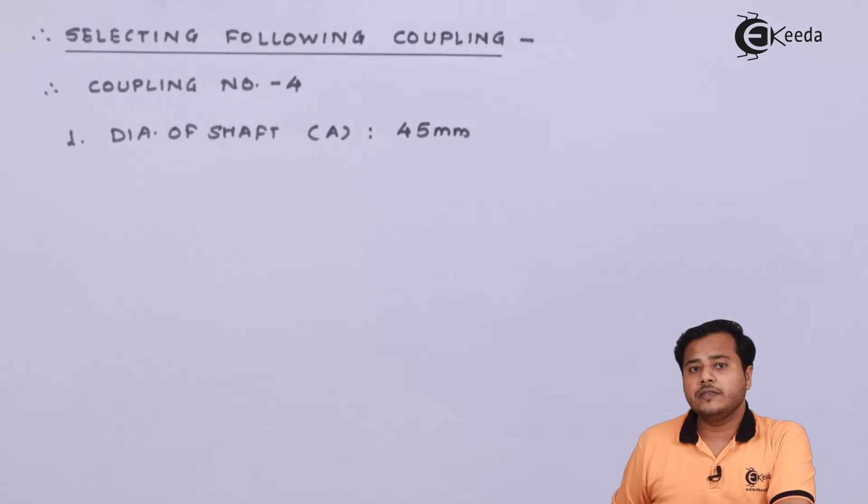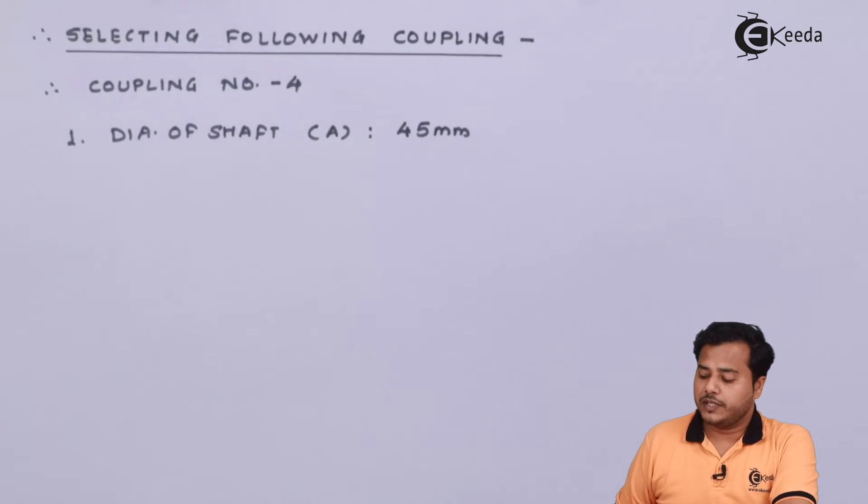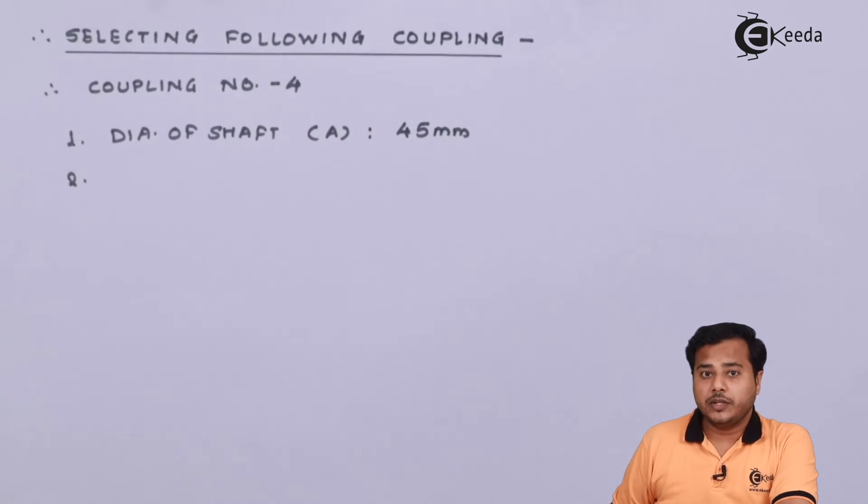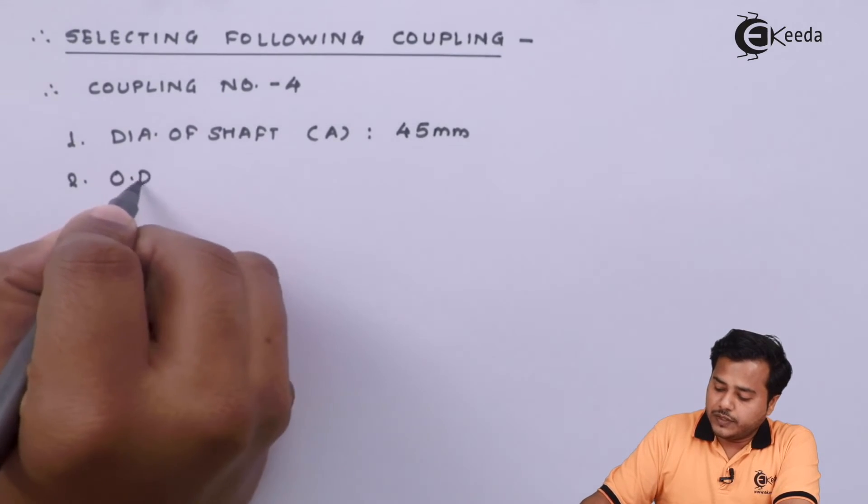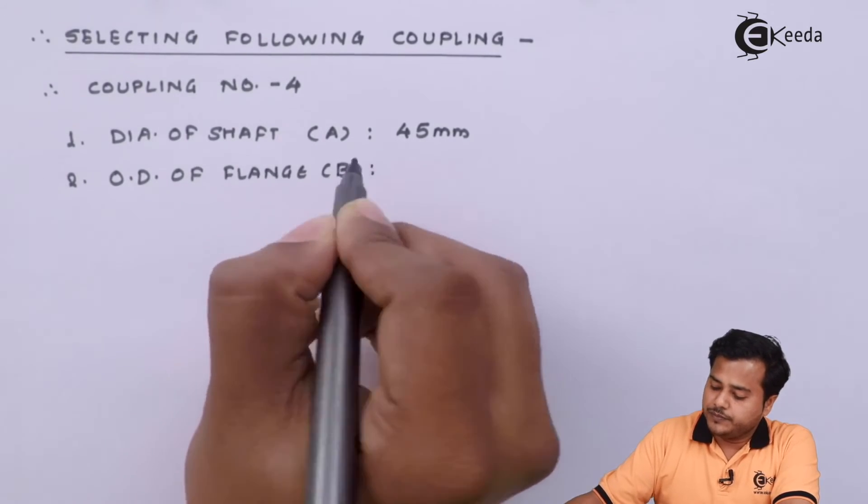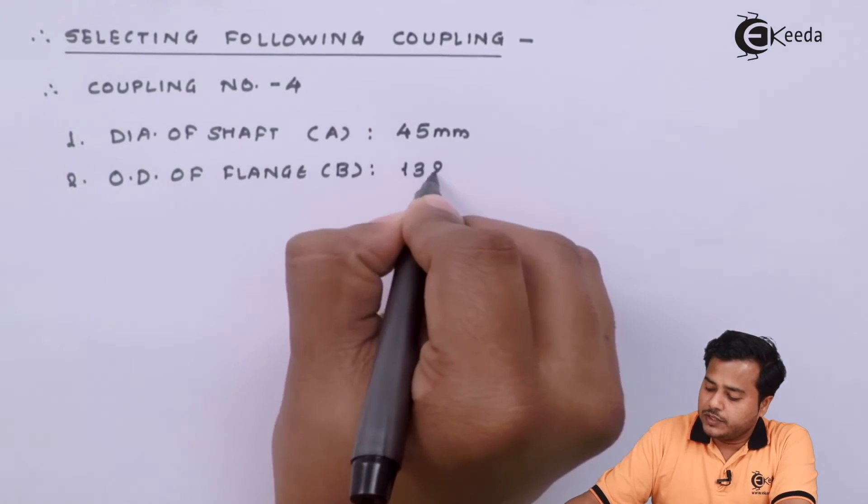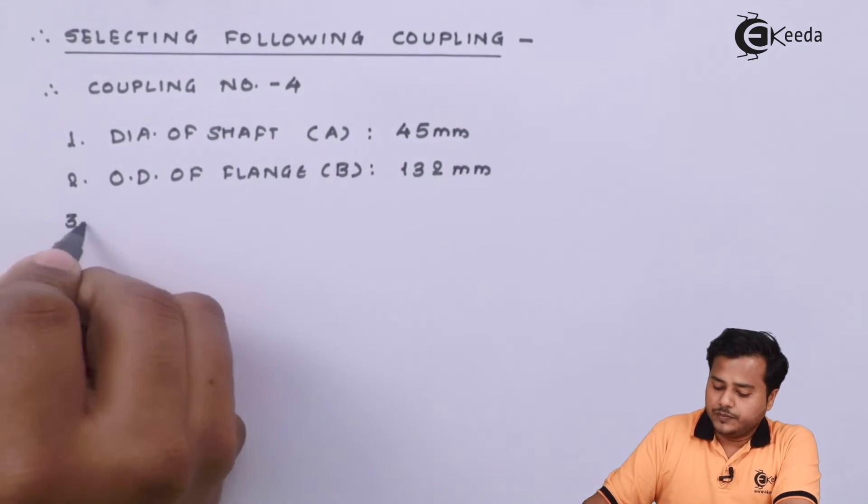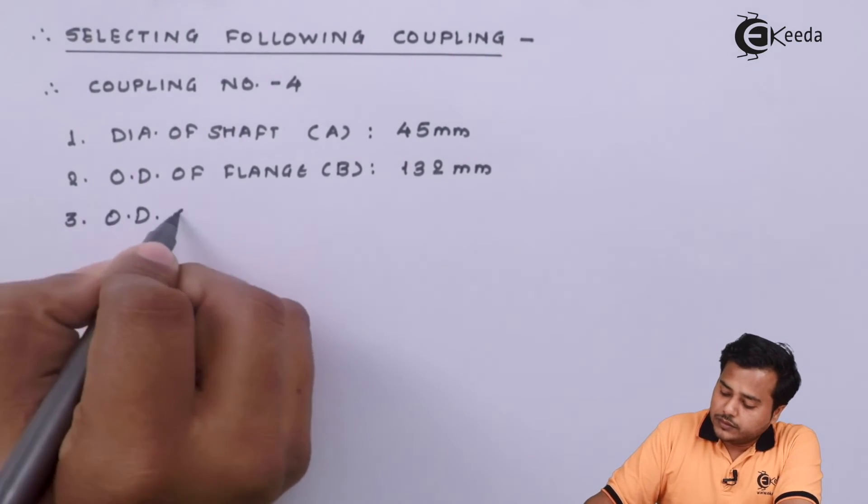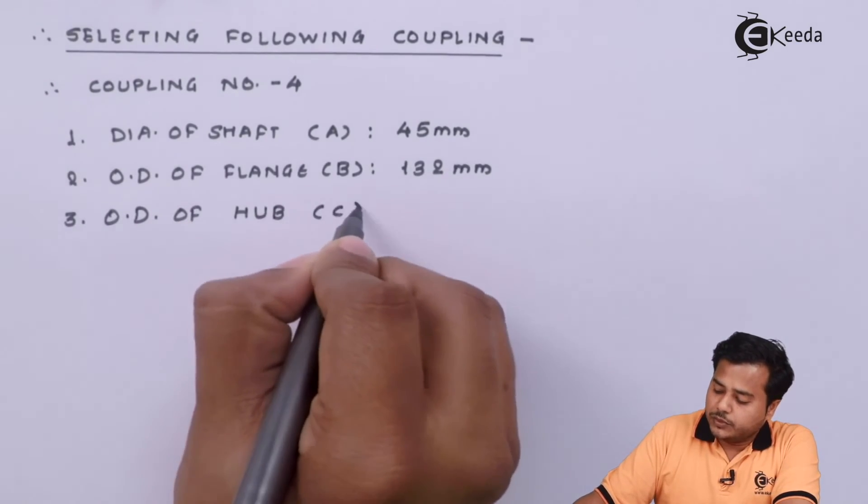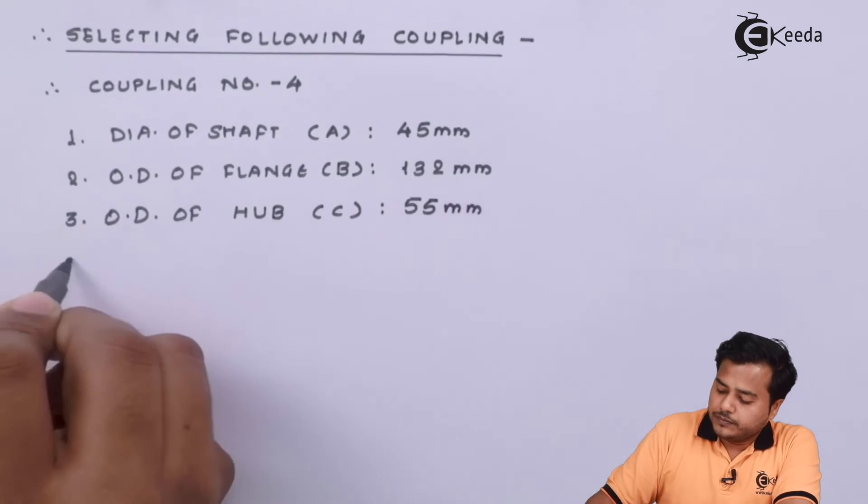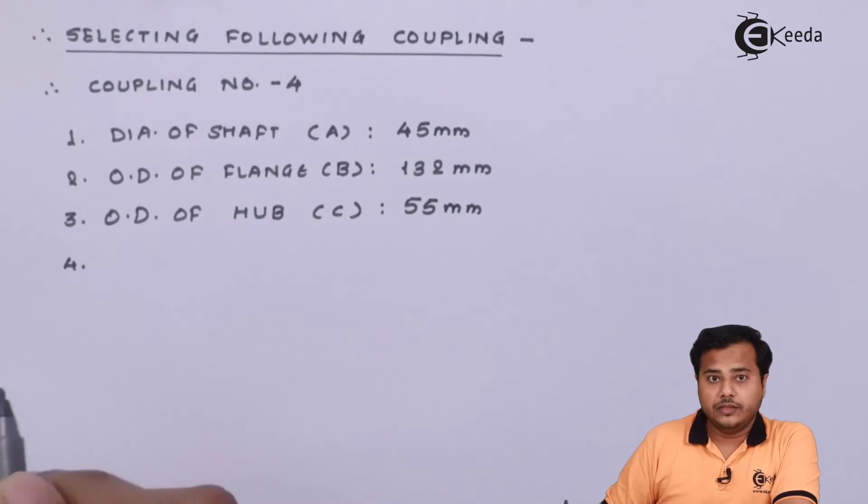Let us call it A value. That comes out to be 45 millimeter for the given case. Now in this case we have not been given any particular dimension for diameter. We can go for the standard selection directly. Then comes the outer diameter of the flange. I will call it OD of flange. Let us call it B. It comes out somewhere around 132 millimeter. The third component is going to be the outer diameter of hub. Let us call it component number C and that comes out to be 55 millimeter.